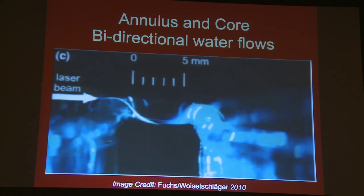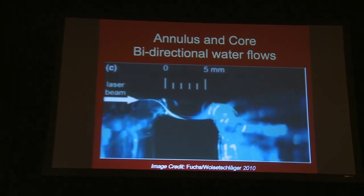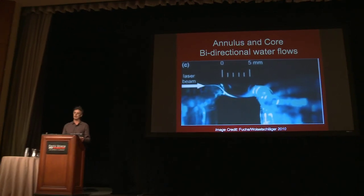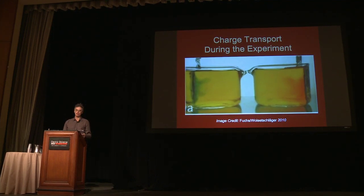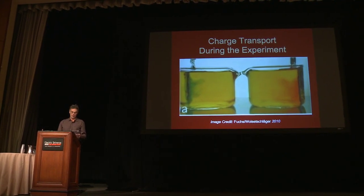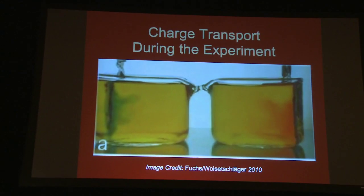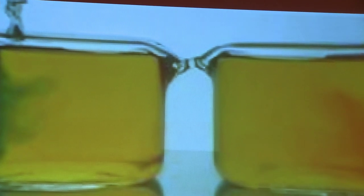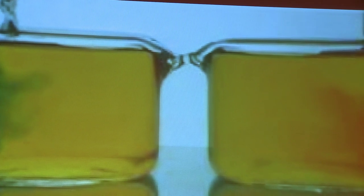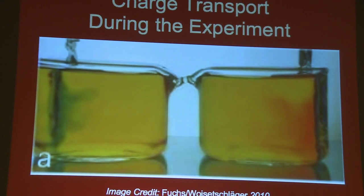Fuchs also found that the annulus and core each carry water along the bridge, but in opposite directions — quite extraordinary: water is flowing in both directions at the same time. Not only water, but charge flows across the bridge as well. Charge flowing in opposite directions is an electric current. Using pH dyes, Fuchs has shown that the bridge transports charge or current from one beaker to the other. Here we can see charge regions adjacent to the terminals boiling off charge during an experiment.